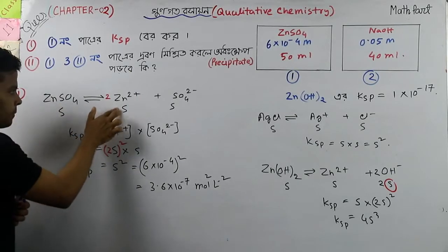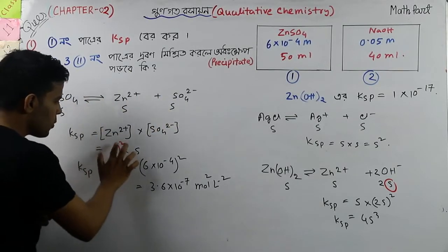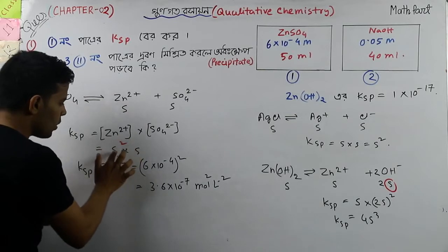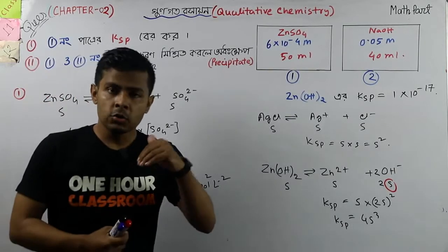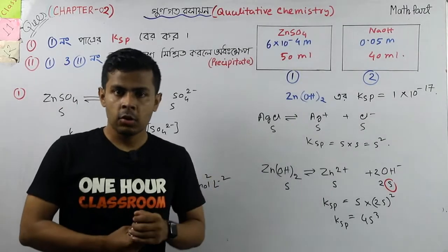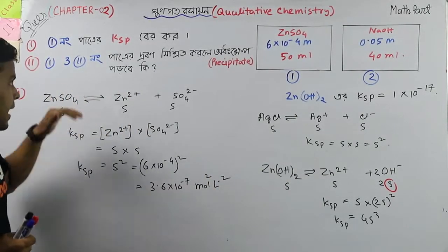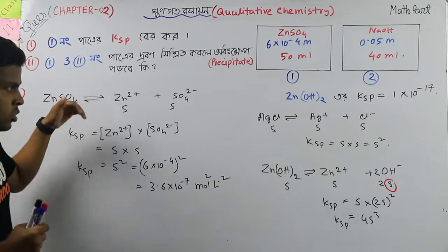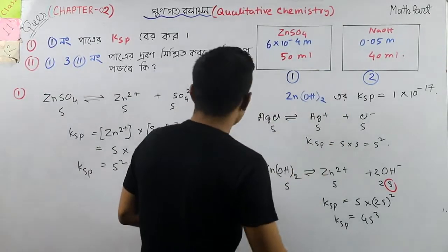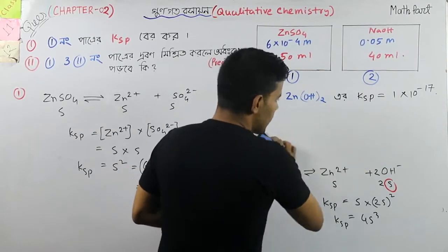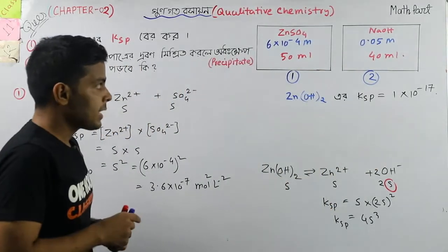So the other KSP for zinc sulfate — to calculate that, now like an amount, let them have a concentration. You do — I can't get into the photo — money outside: 2s whole square means 4s³. So the concentration values are compared.